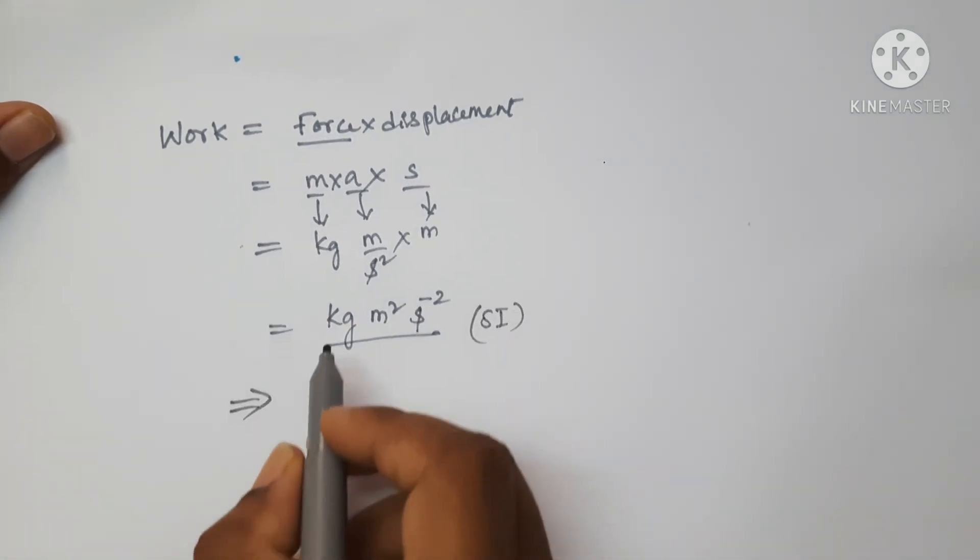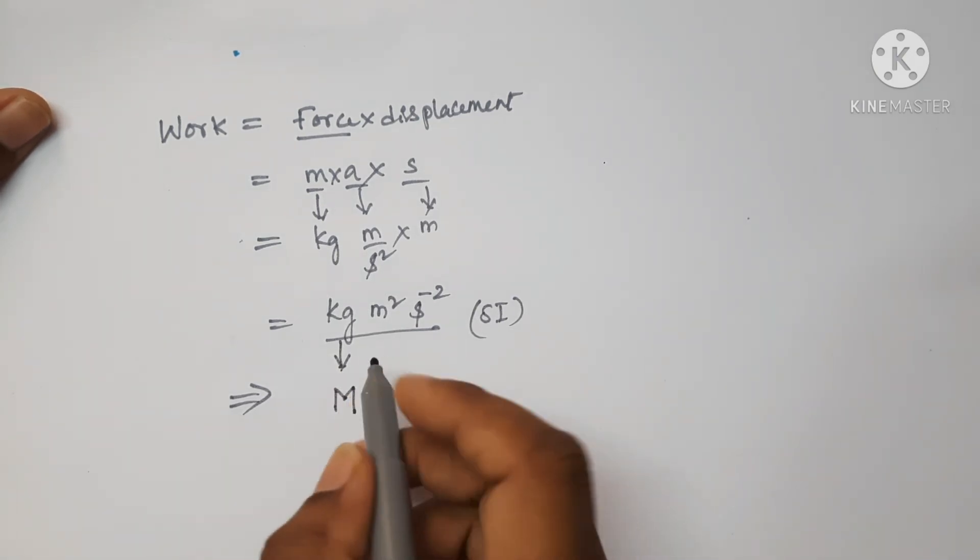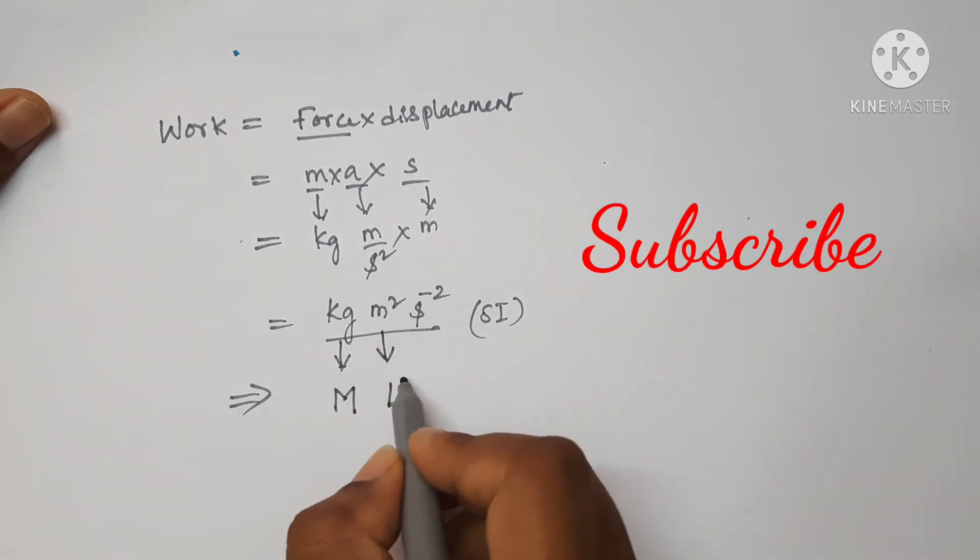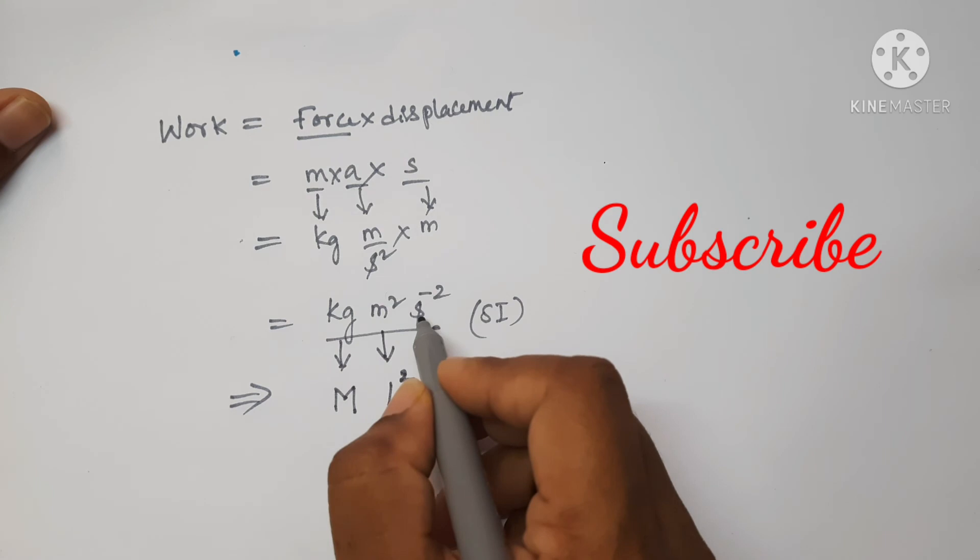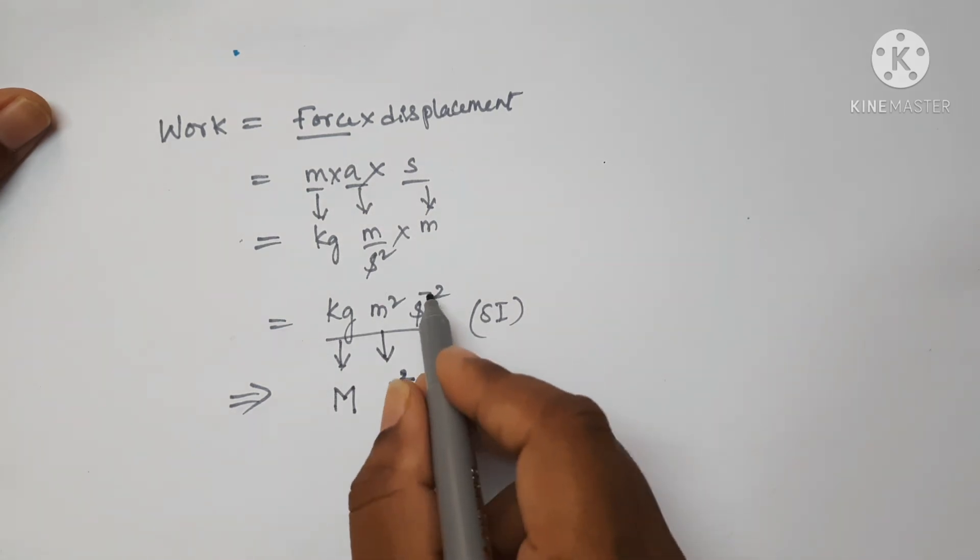Now write the dimensional formula. Kg is denoted with capital M, mass. And meter is the unit for length. M square is there, so L to the power of 2. And here is the second, and it was denoted with capital T minus 2.